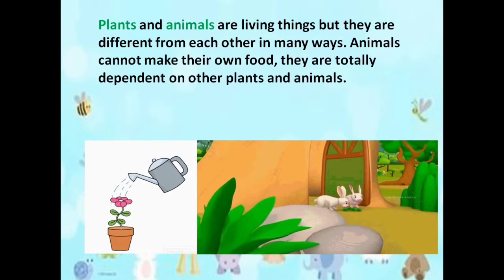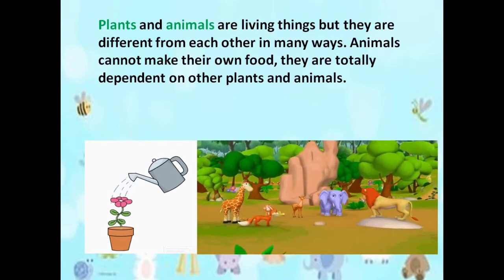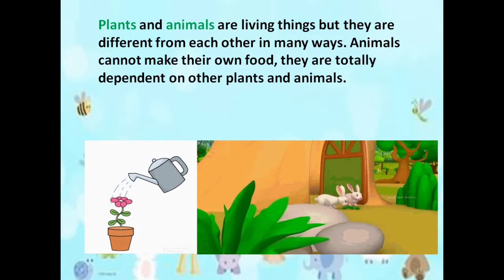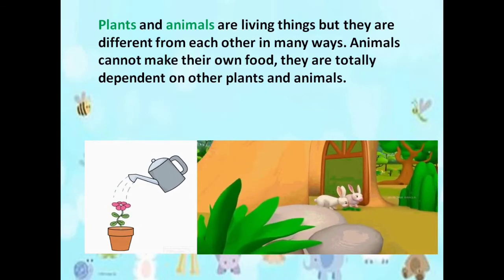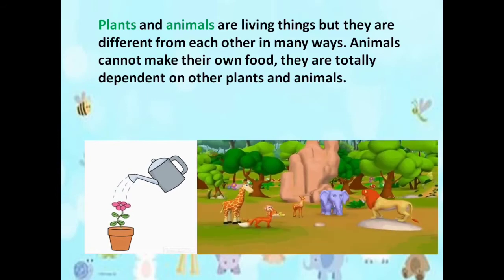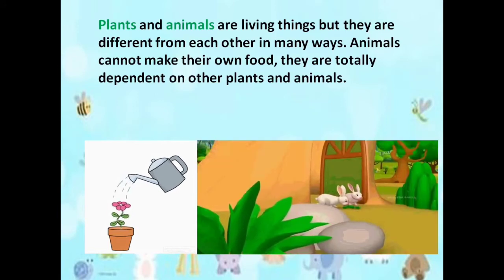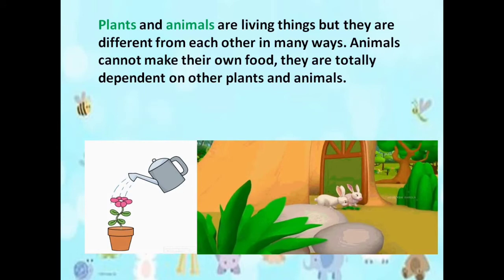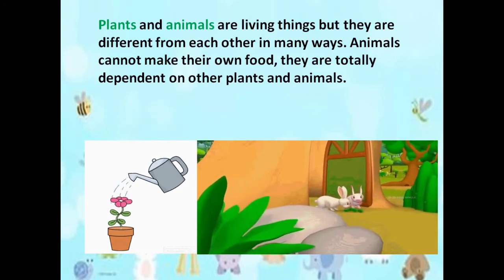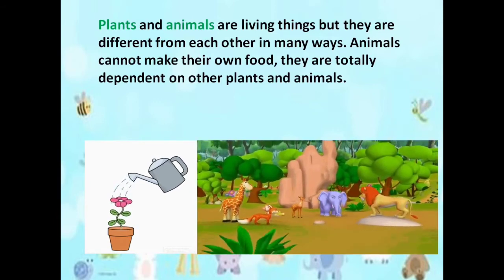When you are small, you cannot do anything on your own — you were dependent on mom or dad for everything. In the same way, in the case of animals, they cannot make food, but as you know every living creature becomes hungry. So they are totally dependent on other plants and animals.